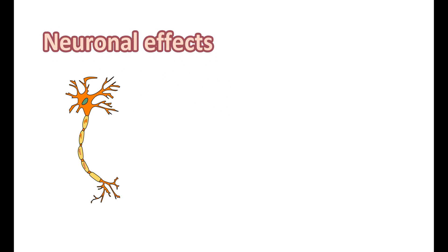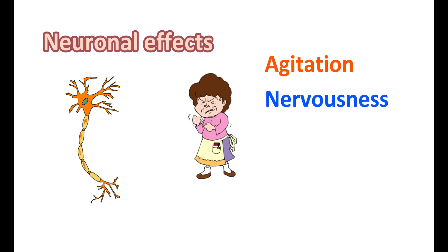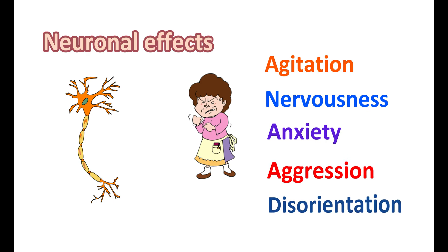Use of Montelukast can produce neuronal effects in a few people. This medication can increase agitation and nervousness, and may also increase symptoms of anxiety. People may also have aggression, disorientation, and even loss of memory. However, these neuronal effects are not observed in all people. Particularly when Montelukast is used for several months, it may produce behavioral effects. Therefore, monitor for any unexpected increase in aggressiveness or agitation while using Montelukast.